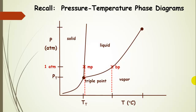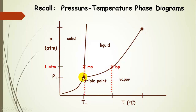Let's remind ourselves about pressure-temperature phase diagrams. We have external pressure on the y-axis and temperature on the x-axis. We are looking at the phases in relation to these temperatures and pressures. Here we have the solid-vapor coexistence line, the solid-liquid coexistence line, and the liquid-vapor coexistence line. We have the triple point and the critical point. The normal melting point and the normal boiling point are measured at one atmosphere. A dotted line down gives us the melting point temperature, and a dotted line from the liquid-vapor coexistence line gives us the boiling point temperature.